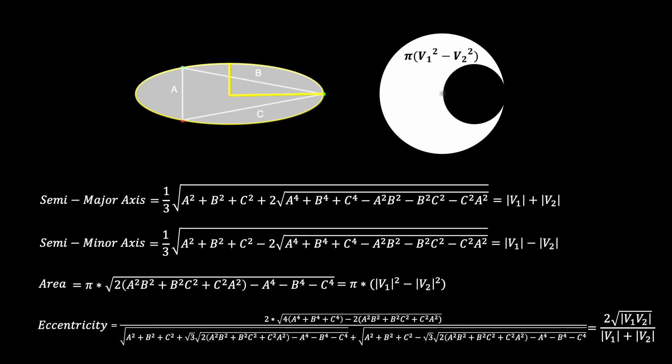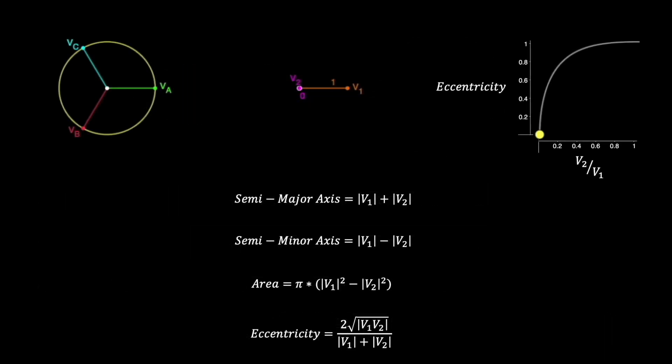The area of this ellipse turns out to be the same as the difference in v1 and v2 circle areas I referenced a minute ago. The eccentricity of the ellipse, which is a measure of how curved it is, is a great way to measure imbalance in the three-phase system.